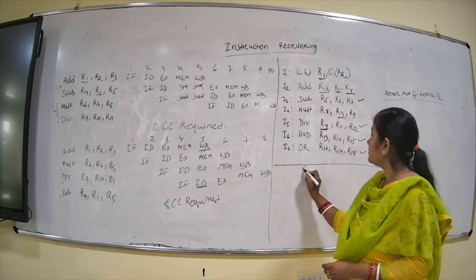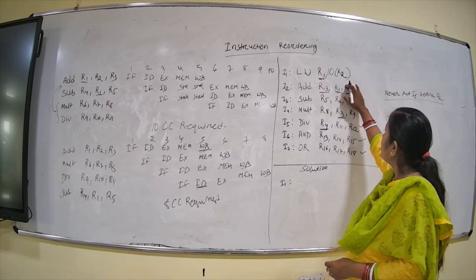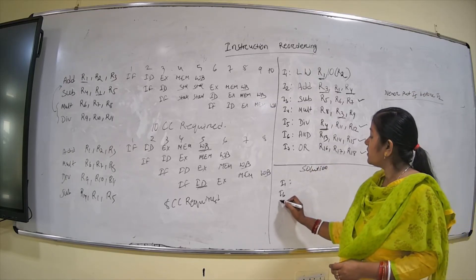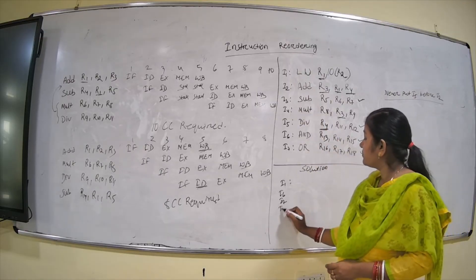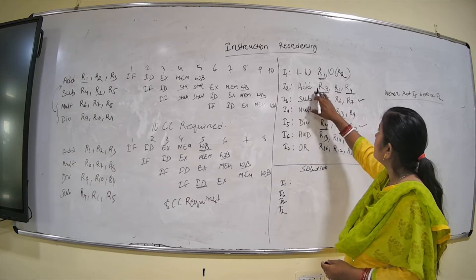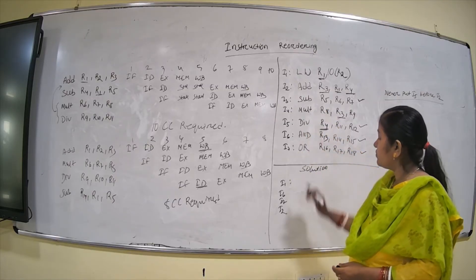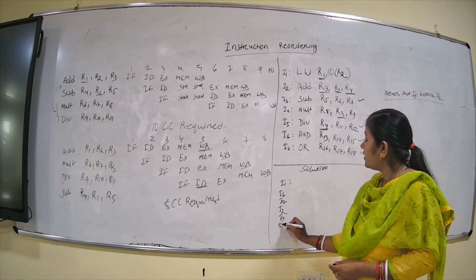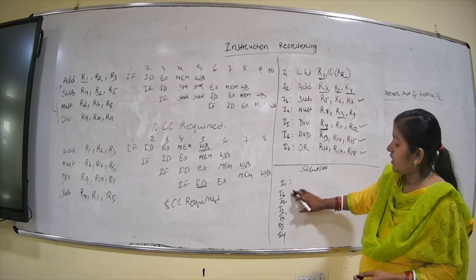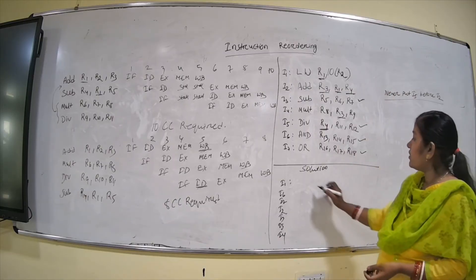The solution is: start with I1, then between I1 and I2 we cannot put I5, so we put I6 and I7, then I2. After I2, there is a dependency between I2 and I4, so between them we put I3 and I5, then I4. The final reordered sequence is: I1, I6, I7, I2, I3, I5, I4.